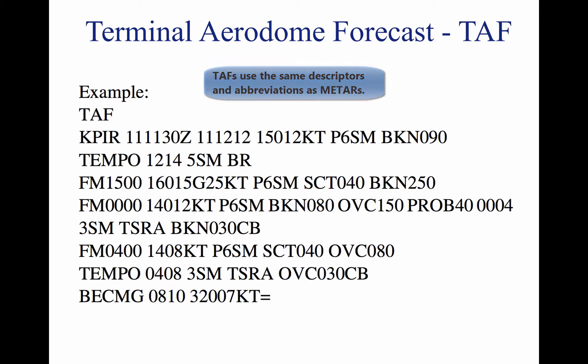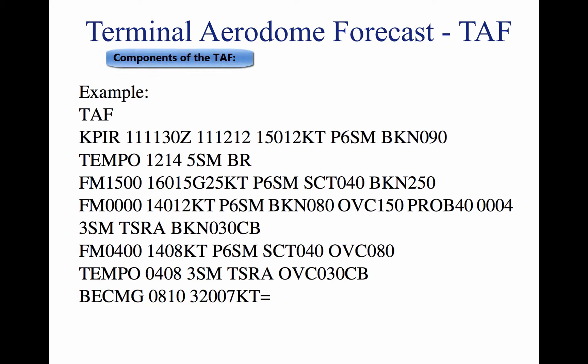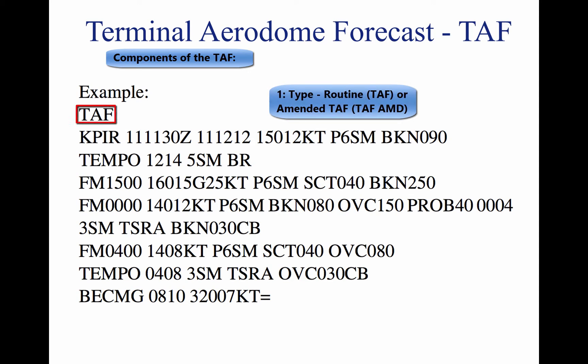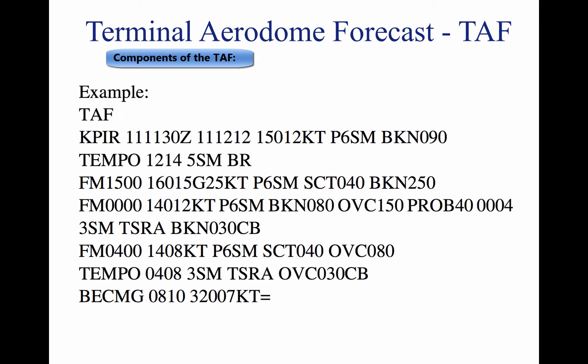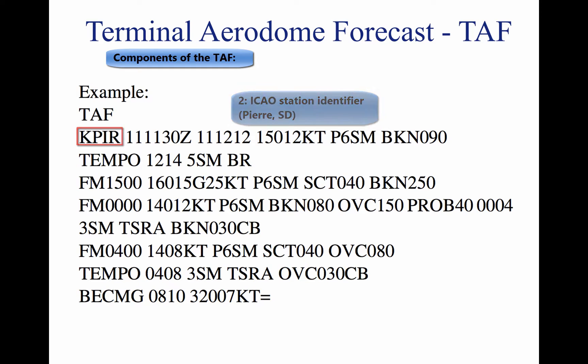The TAF indicates the following information in sequential order. 1. Type of report: TAF. A TAF can be either a routine forecast, TAF, or an amended forecast, TAF-AMD. 2. ICAO station identifier, for example KPIR — the same identifiers as a METAR report.